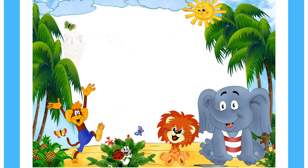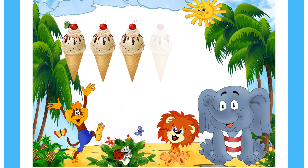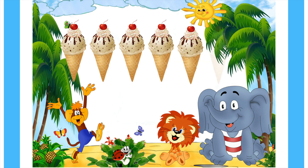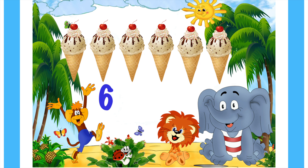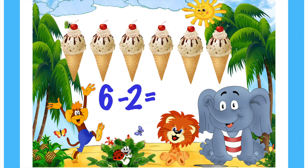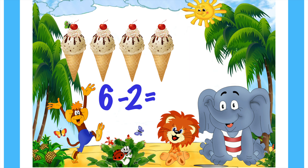One, two, three, four, five, six ice creams and you are going to eat two. Here the subtraction you are going to do is six minus two, which means you have six ice creams and you take away two. So how many are left? One, two, three, four. So the answer is four.